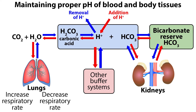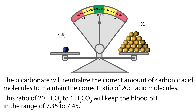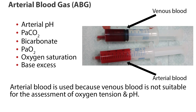If both the lungs and kidneys are working properly, the natural buildup of acids will be neutralized effectively by the buffer system. The buffer system works very quickly to maintain proper pH of the blood and body tissues. The bicarbonate will neutralize the correct amount of carbonic acid molecules to maintain the correct ratio of 20 to 1. This ratio of 20 bicarbonate, or HCO3, to 1 carbonic acid, H2CO3, will keep the blood pH in the range of 7.35 to 7.45.